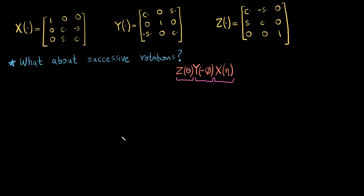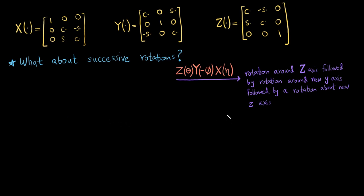Understanding what this represents is very critical before we proceed. The way that you read these successive rotations is from left to right: the point is rotated around the z-axis first, then there is a rotation about the new y-axis, followed by rotation about the new x-axis. Initially the z-axis is aligned with the fixed frame, then the y-axis is the new y-axis after it has been rotated by the z rotation, and then the x-axis is the new x-axis after it has gone through both of these transformations.